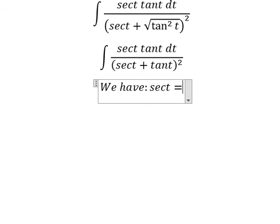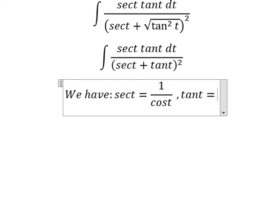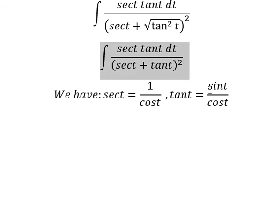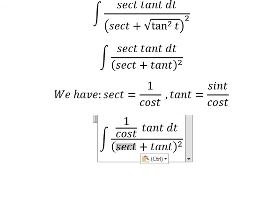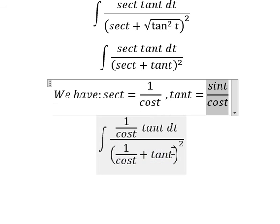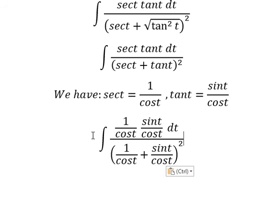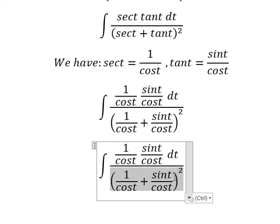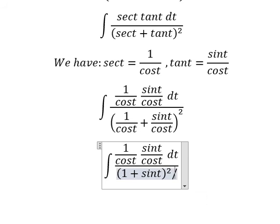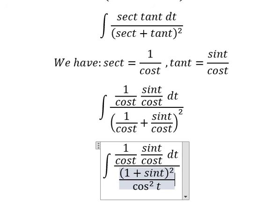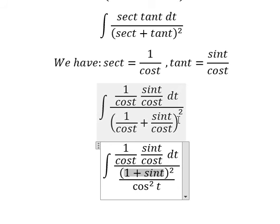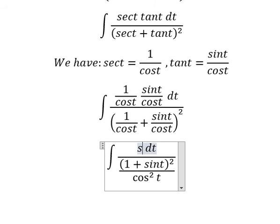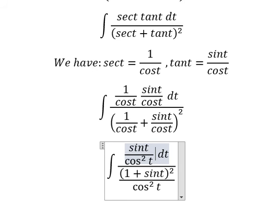So sec(t) equals one over cos(t), and tan(t) equals sin(t) over cos(t). I will substitute these in here — tan(t) we change by this expression. If we simplify, we have one plus sin(t) to the power two, and we have cos(t) times cos(t), which gives us cos²(t). Now we can simplify.